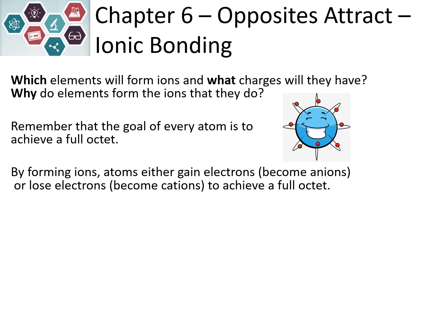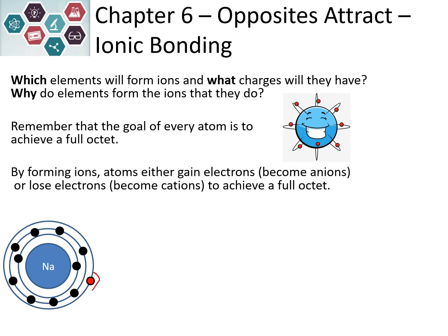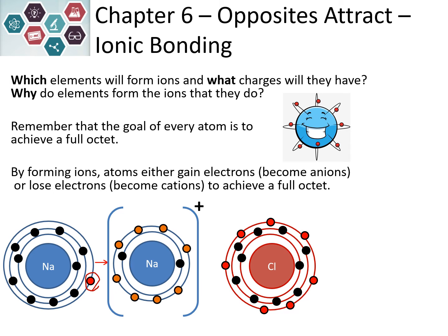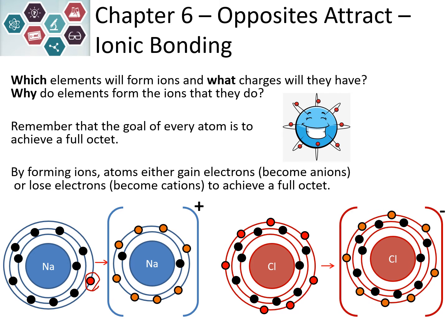All atoms want to achieve a full octet — they want to have eight electrons in their outermost shell or orbital. If we're forming ions, the atoms are either gaining or losing electrons in order to get to eight electrons in their outer shell. If we look at sodium, it has one electron in that third shell. If it loses that electron, then the second shell has a total of eight, which is the goal. Chlorine has seven electrons in its outermost shell; if it gains an electron, it has eight. When sodium loses its electron, it becomes positively charged. Chlorine can gain that lost electron and become negatively charged. Because they have opposite charges, they are attracted to each other.